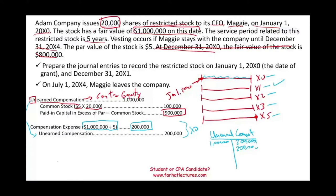At the end of year X2, we do the same thing — debit compensation expense, credit unearned compensation. At the end of year X3, again, debit compensation expense, credit unearned compensation. So far, we have reduced unearned compensation by $800,000 and increased compensation expense by $800,000 over a four-year period.